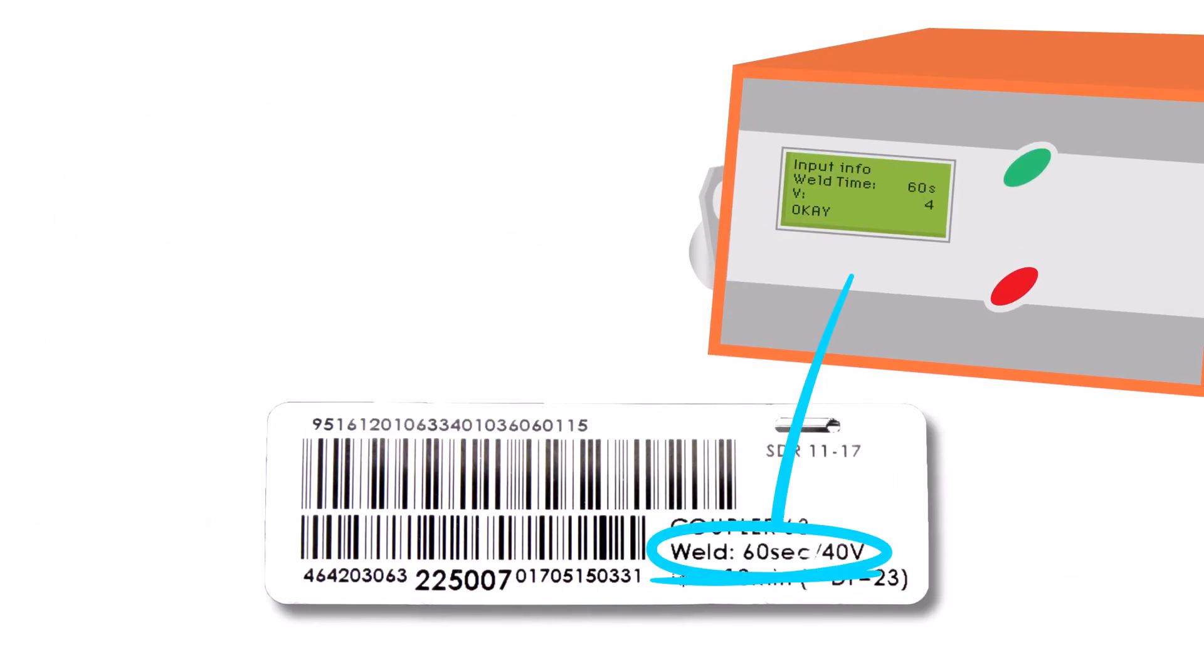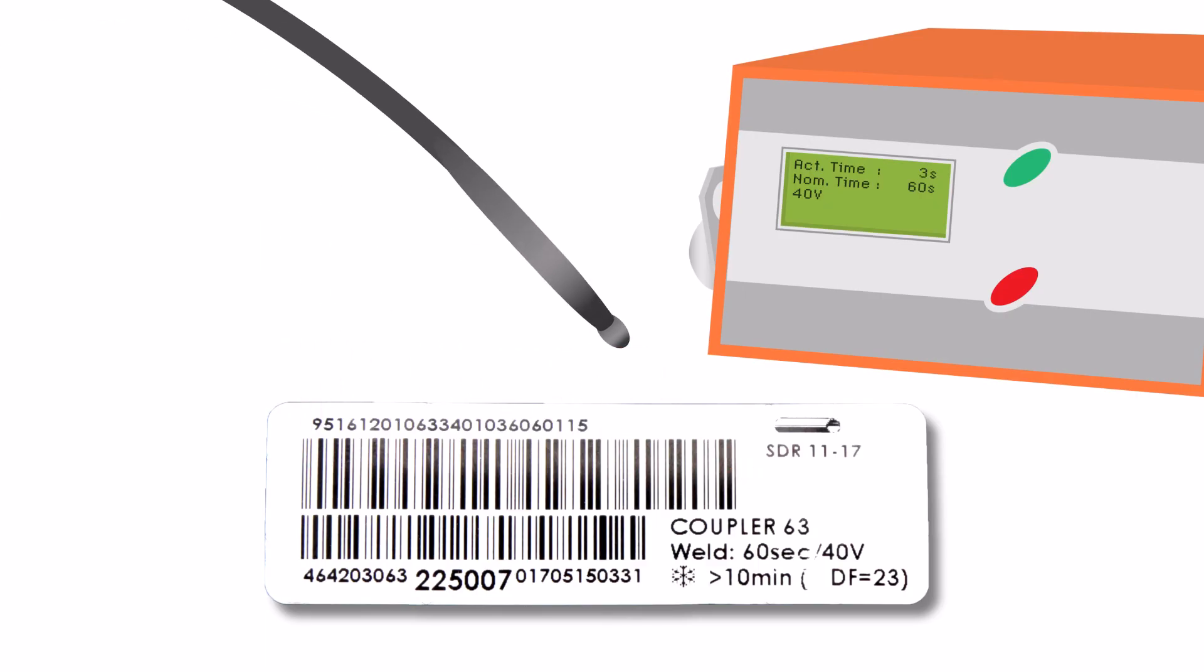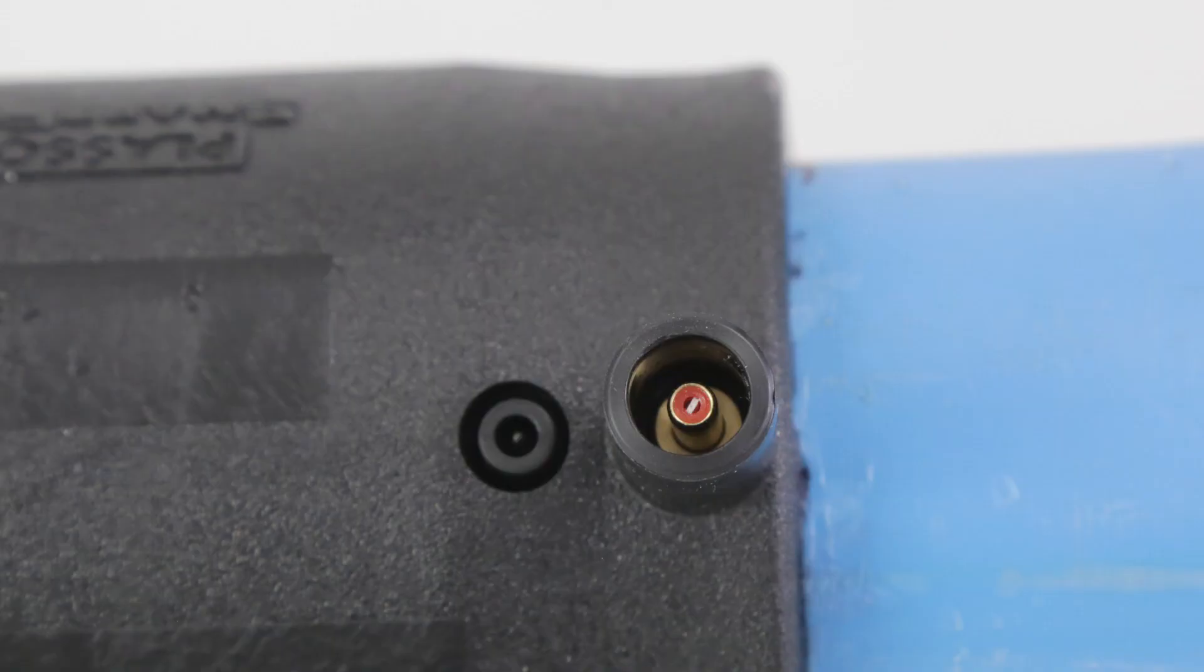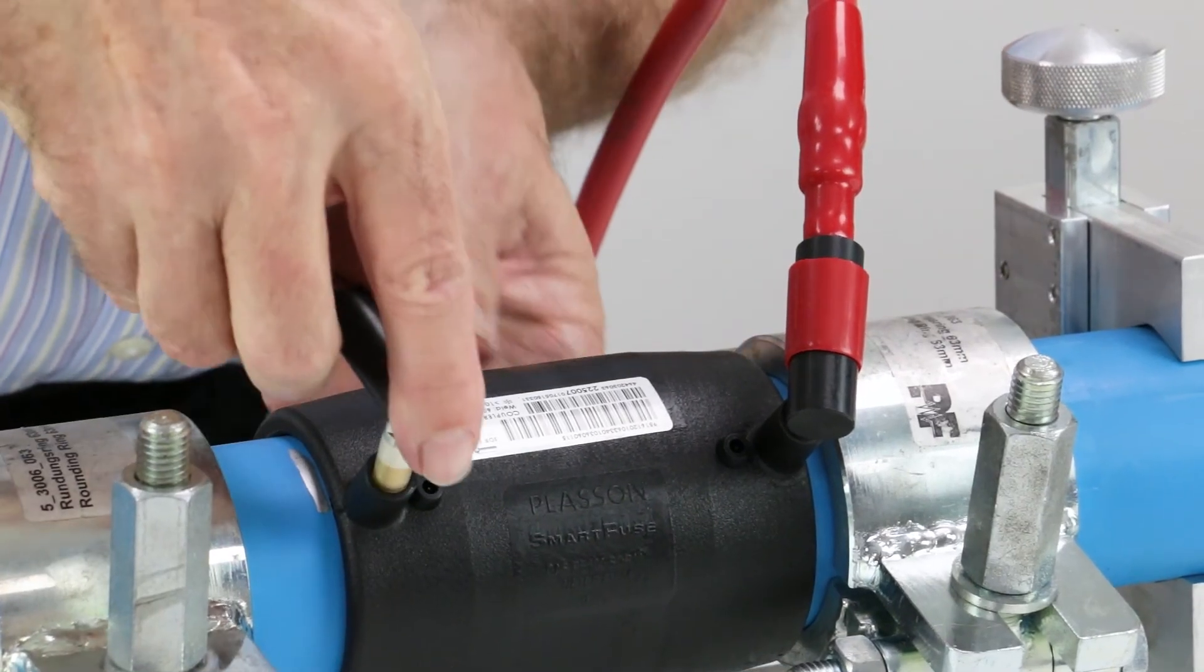Some EF controllers will require you to input the weld time manually. Some will have a scanner that reads the barcode and inputs the time for you, but the one we're using actually has special wires that read the welding data from the pins on the fitting. Whatever the case, just follow the manufacturer's instructions that will have come with the EF controller.